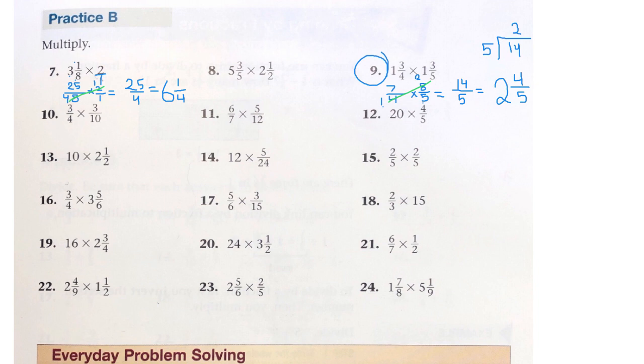All right, let's try one more. How about 21? 6/7 times 1/2. So here we don't have any whole numbers. And we don't have any mixed numbers. And we do not have an improper fraction. But what we can do is cross-cancel.